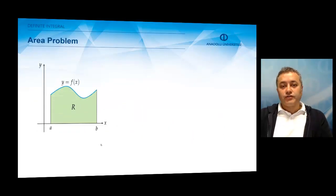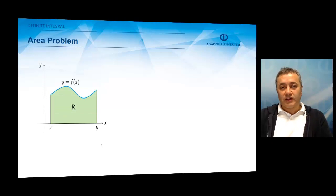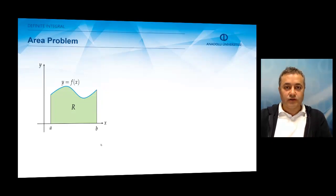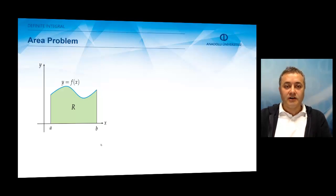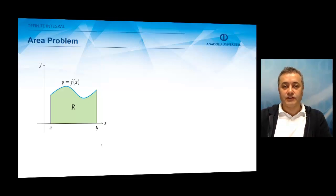What we are going to do is introduce a function y equals f of x, which, for the sake of simplicity, we are going to take as positive, and we are going to try to calculate the area of the region R bounded by the graph of f and the x-axis between the lines x equals a and x equals b.